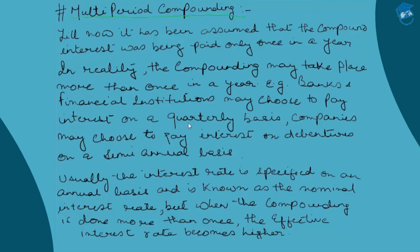Banks may pay interest quarterly; companies may choose to pay interest on debentures on a semi-annual basis, which is quite common. Usually the interest rate is specified on an annual basis and is known as the nominal interest rate. But when compounding is done more than once, the effective interest rate becomes higher than the nominal interest rate.